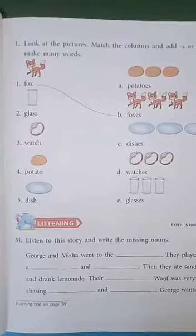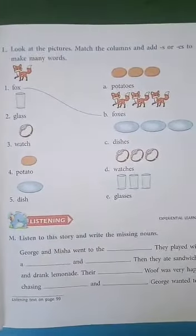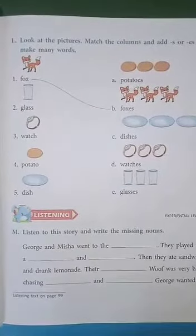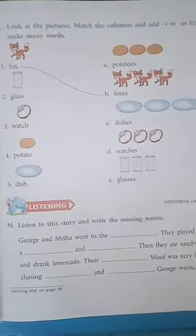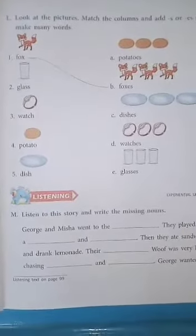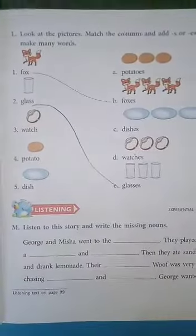Let's move on to the next exercise on page number 33, exercise L. Look at the pictures, match the columns, and add S or ES to make many words. We have already read about changing a singular noun to a plural noun. For example, the first one is done: fox becomes foxes, glass becomes glasses. Numbers 3, 4, 5 — do on your own.